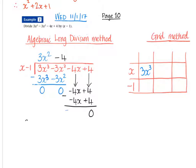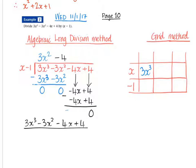So that actually means when we've got 3x cubed minus 3x squared minus 4x plus 4, divided by x minus 1, that will give us an answer of 3x squared minus 4.